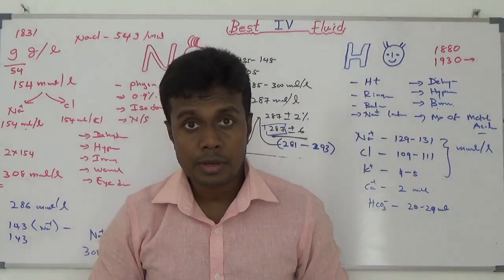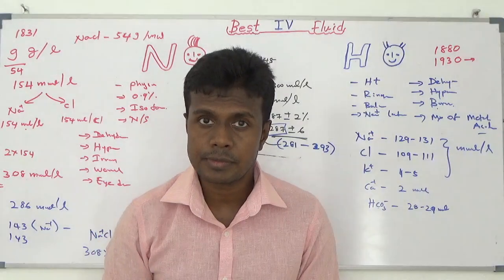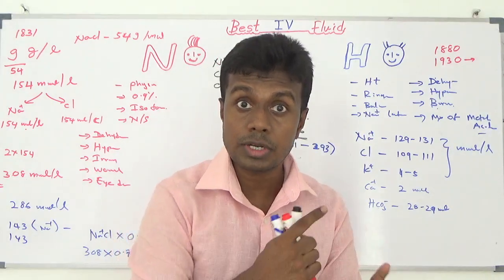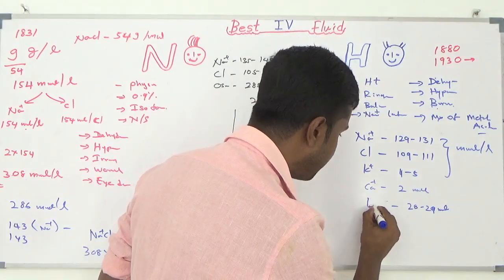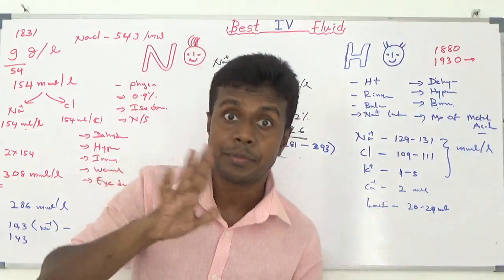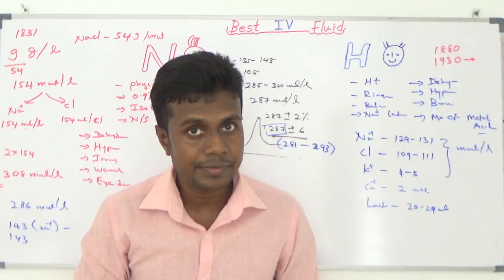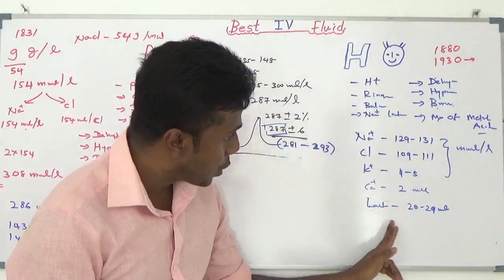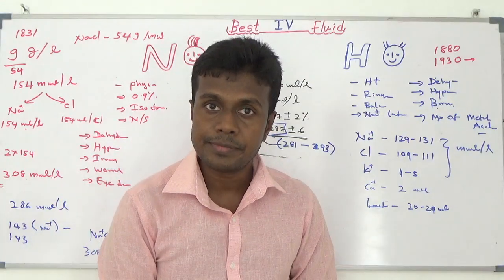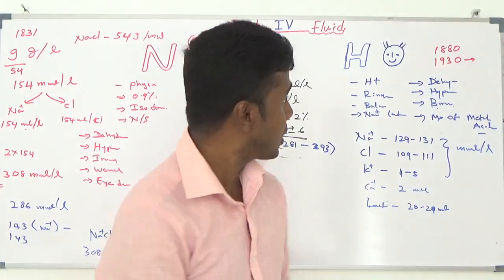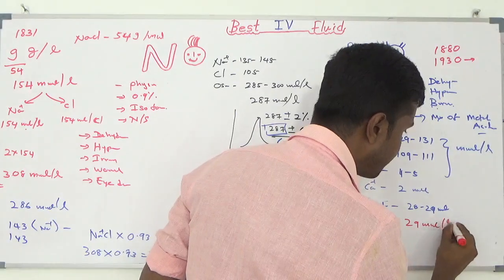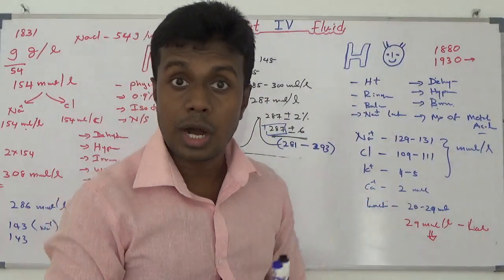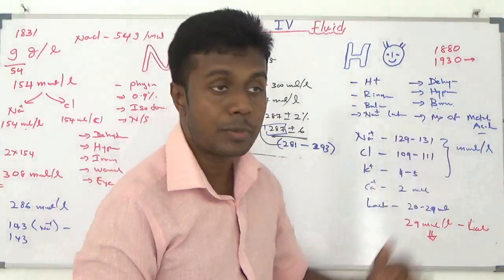Some books mention lactate while others mention bicarbonate. Once your lactate goes into your liver, it metabolizes and converts into bicarbonate. Because of that, some books list it as lactate and some as bicarbonate. This is how Hartmann solution can be used for management of metabolic acidosis — the approximately 29 millimoles per litre of lactate is converted into bicarbonate in the liver, producing a larger amount of bicarbonate.